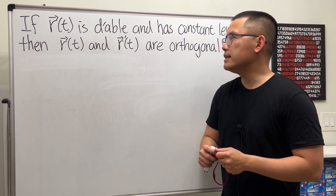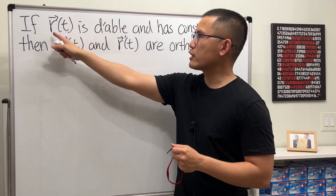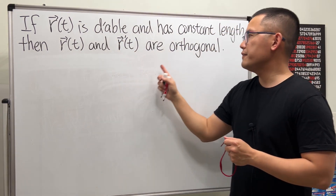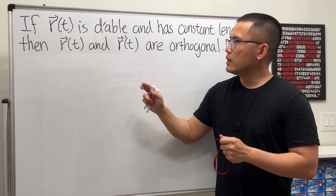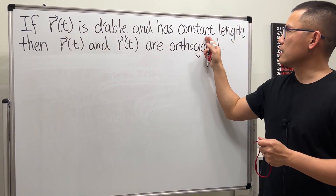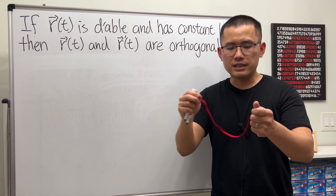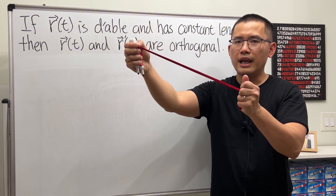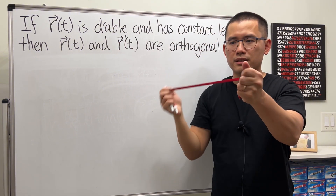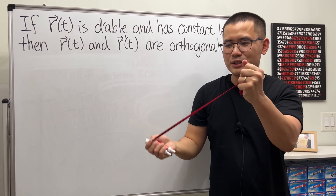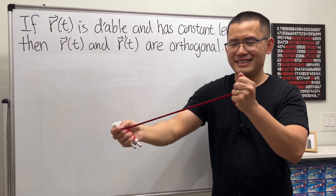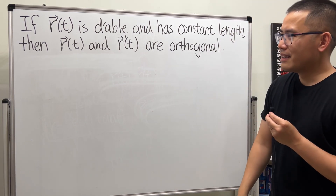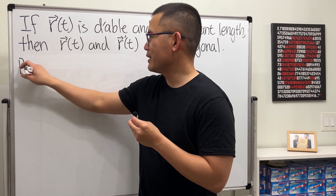Today let's do a proof of a very useful statement: if we have a vector function that is differentiable and has constant length, then the vector function and its derivative are orthogonal. How can the vector function have constant length? If this is the origin and this is the length, keeping the same length means the tip is just moving on a sphere. Let's do the proof first.